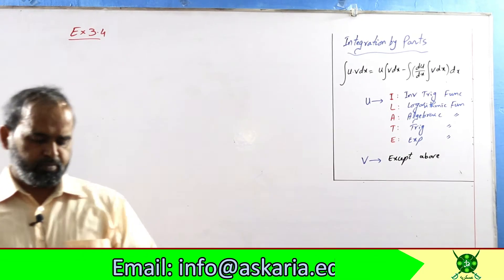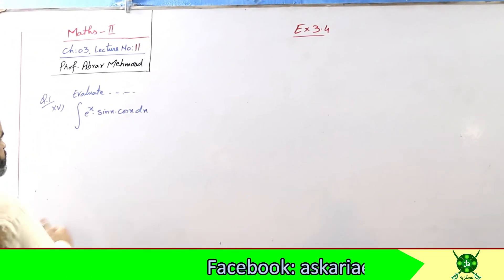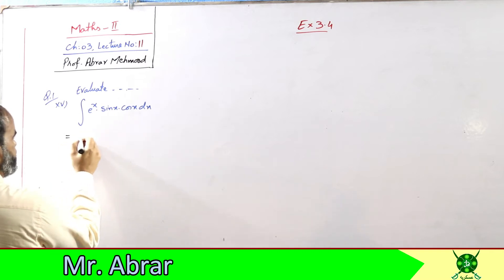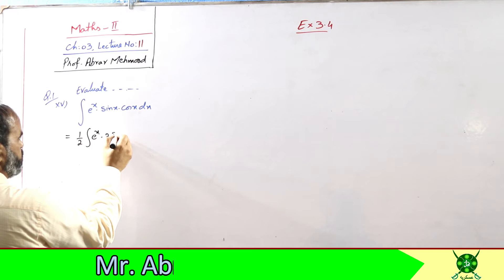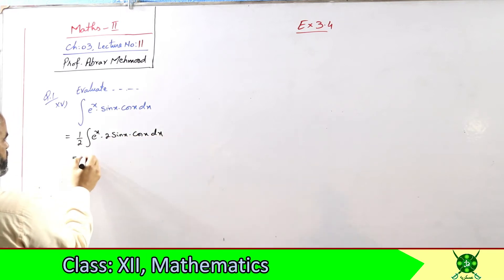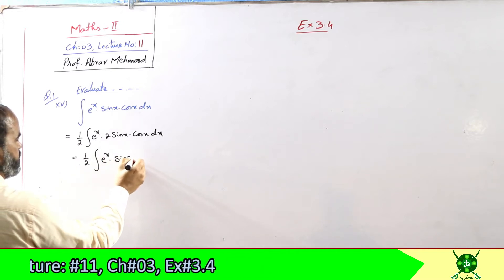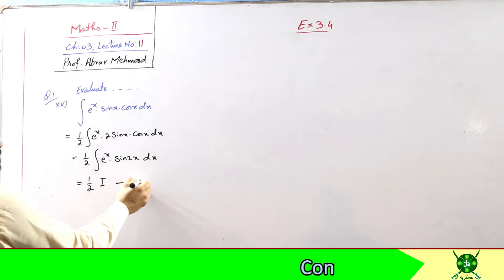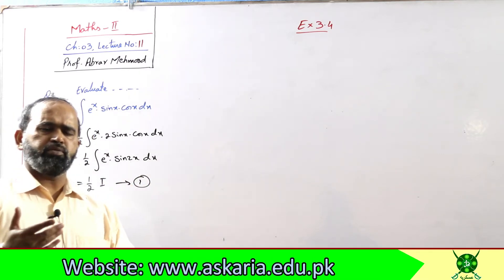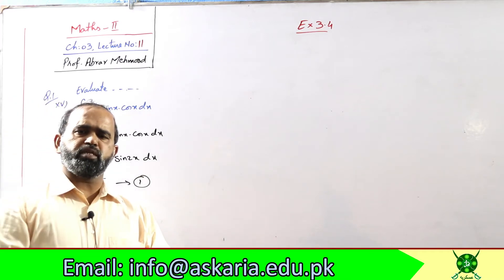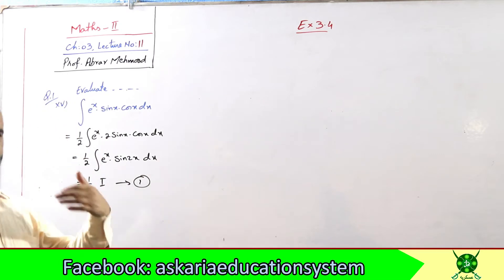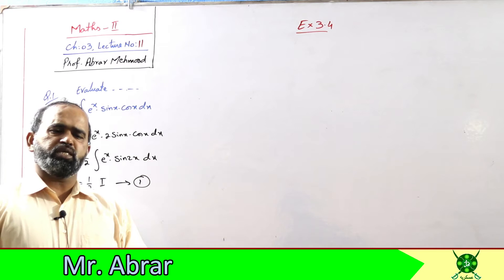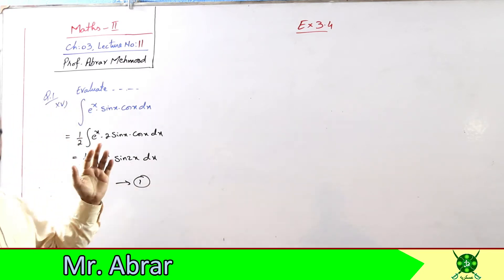Ab question 1 ka 15th part aagaya jismein trigonometric functions bhi hain aur exponential function bhi hai. Yahan pe jo trigonometric functions hain woh dono product form mein hain, to pehle in dono ko milakar ek single function banate hain — sin two x. Phir integral ko capital I ke equal lete hain, jaise derivative mein y ke equal lete the. Hum capital I wahan dete hain jahan uske repeat hone ka chance ho.